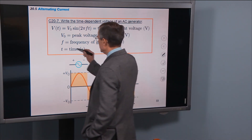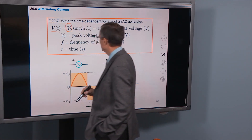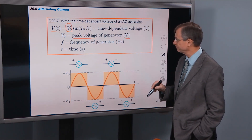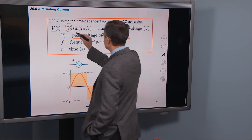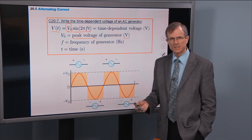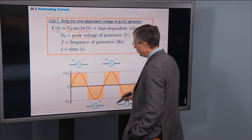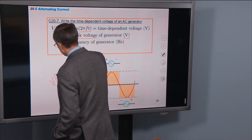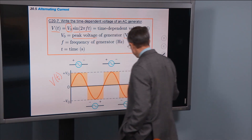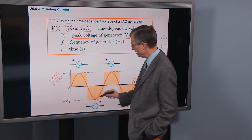The voltage as a function of time is this peak voltage V-naught, measured in volts, times the sine of 2πf, where f is the frequency, times the time. This is a voltage — plotting voltage as a function of time, it looks like a sinusoidal wave.